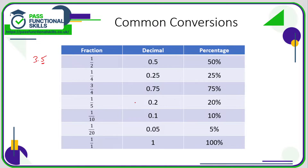One fifth is 20% or 0.2. One tenth is 10% or 0.1. One twentieth is 0.05, otherwise known as 5%. One whole — one over one — as a decimal is just 1, which is 100%. Make sure you're really familiar with these fractions, decimals, and percentages.